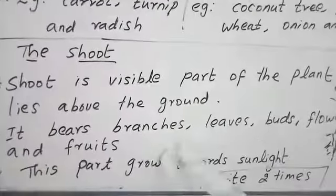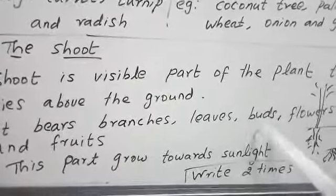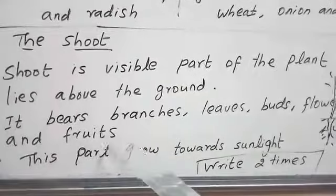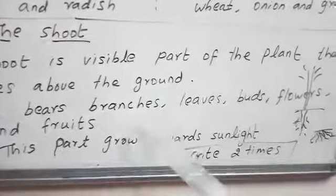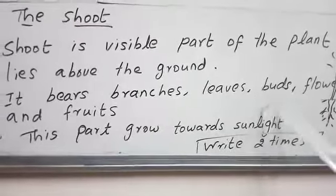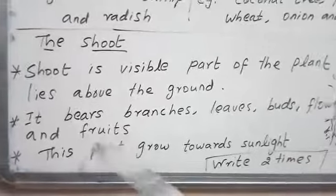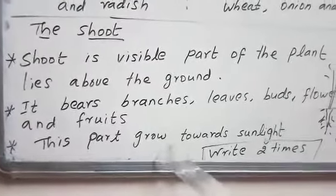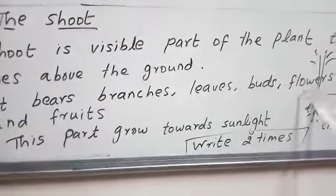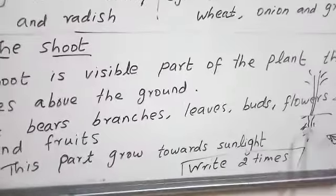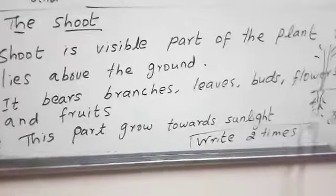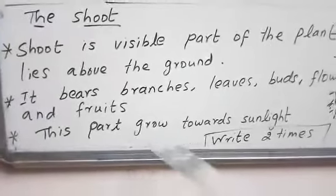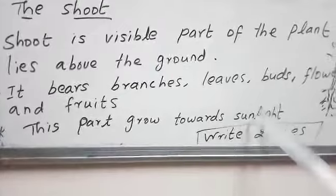The shoot bears branches, leaves, buds, flowers, and fruits. This part grows towards the sunlight — it grows towards the sunlight. The root part moves towards the soil, so the shoot part grows towards the sunlight.